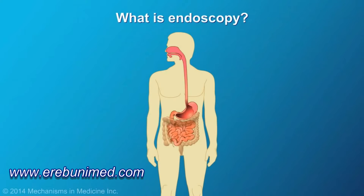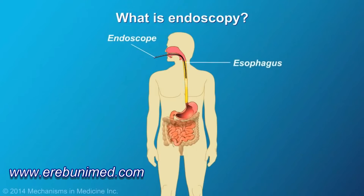Endoscopy is a medical procedure in which a flexible instrument that has a camera on the end, called an endoscope, is passed into an area of the body, such as the gastrointestinal or GI tract.